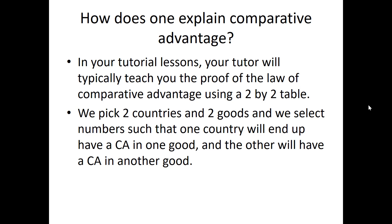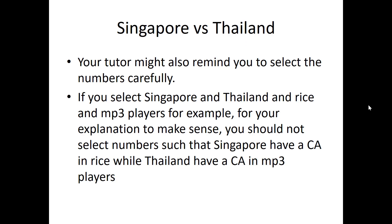In your tutorial lessons, your tutor will typically teach you the proof of the law of comparative advantage using a 2x2 table — 2 countries and 2 goods — selecting numbers such that one country ends up having a CA in one good and the other has a CA in another good. Your tutor might remind you to select numbers carefully. For example, if you pick Singapore and Thailand with rice and MP3 players, you should not end up with Singapore having a CA in rice while Thailand has a CA in MP3 players, because we know Singapore does not export rice. Selecting the wrong numbers will cause a problem.